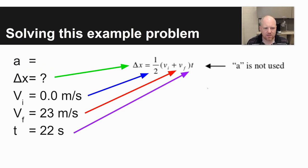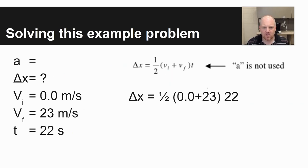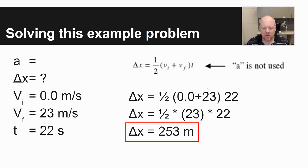To go through and actually solve this problem, just given the variables without a word problem, I've identified in different colors what these different variables would be. When I start filling in the information given to us, I end up with delta X equals one-half times the quantity zero plus 23 times 22. When I use the correct order of operations, I end up with an answer for delta X that is 253 meters.